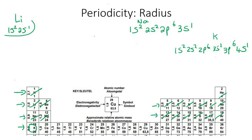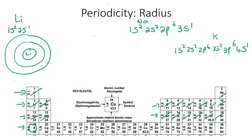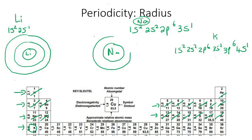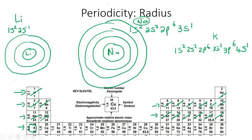Look at the largest energy level in lithium — it's 2. That means if you drew the nucleus of lithium, it would have two energy levels around it. For sodium, the highest energy level is 3, so it would have three energy levels around the nucleus. For potassium, the highest energy level is 4, so it would have four rings around its nucleus.